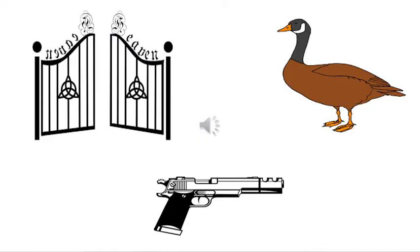So let's see the pictures. Children, let us look at these pictures which start with the sound G. The sound G is made by the letter G.